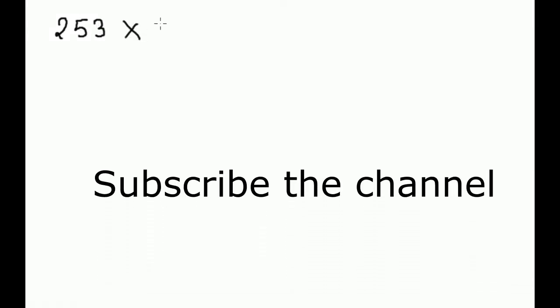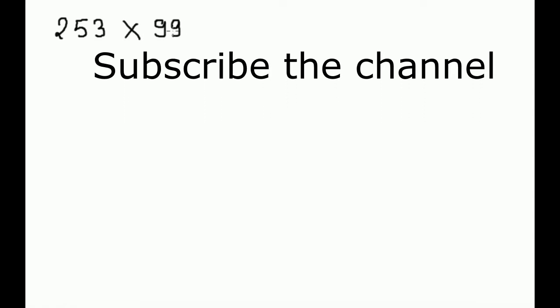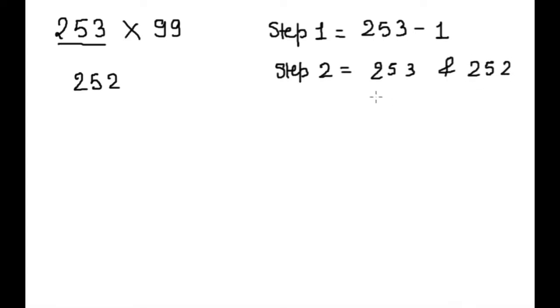So my first example is 253 multiply by 99. Step 1. First, we will subtract 1 from 253. So this is 252. Step 2. We will divide 253 and 252 in 2 parts.